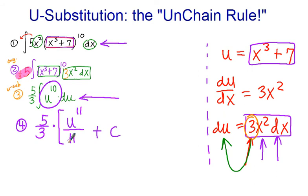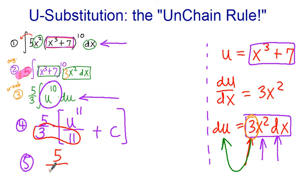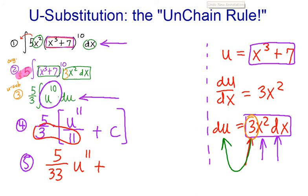I'm going to bring down the 5 thirds as a constant multiple, and now we'll use our basic anti-derivative rules. The anti-derivative of u to the tenth is u to the eleventh power divided by eleven, plus any constant. Technically I should multiply the whole quantity by 5 thirds. Step 5, let's simplify these fractions: in the denominator we have 3 times 11 which gives 33, keep 5 on top. If you have a random constant, you're going to end up with a random constant, so we might as well just call it c.